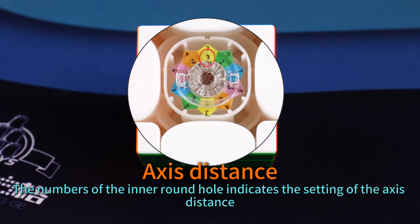Axis distance. The numbers of the inner round hole indicate the setting of the axis distance.